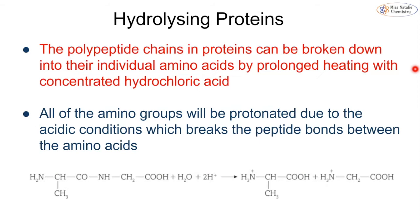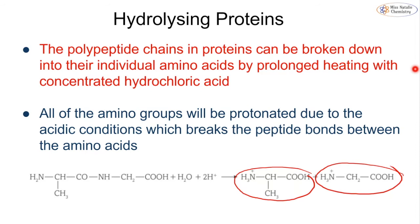We can break down these proteins just as we can break down any condensation polymer by hydrolysing the molecule, which breaks it back down into individual amino acids. The way we do this is to heat it with concentrated hydrochloric acid. This protonates all of the amino groups due to the acidic conditions, breaking all of the peptide bonds, and we go back to our individual amino acids, which could then be deprotonated if needed.